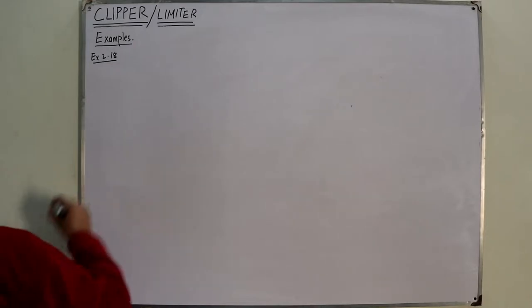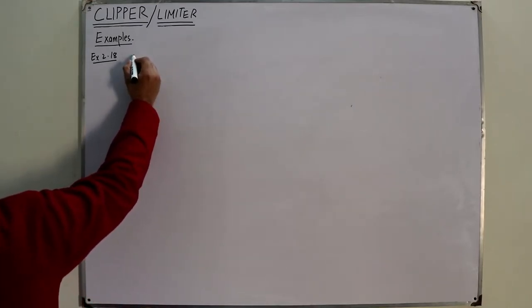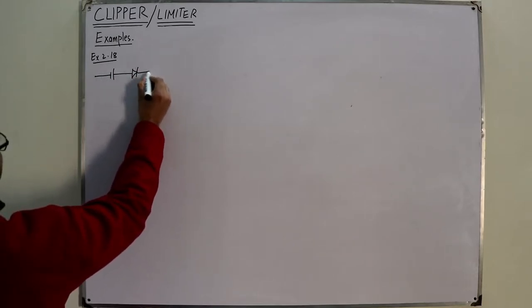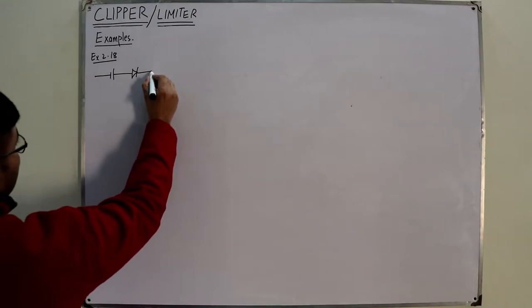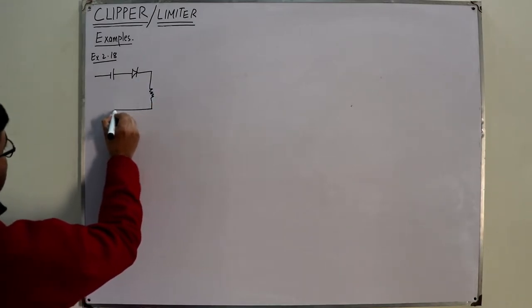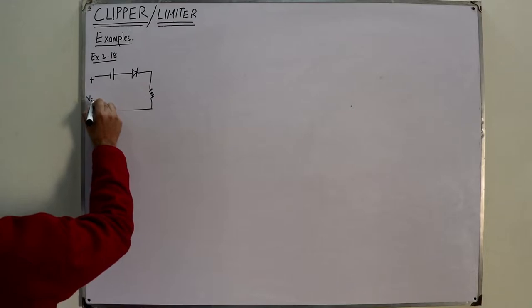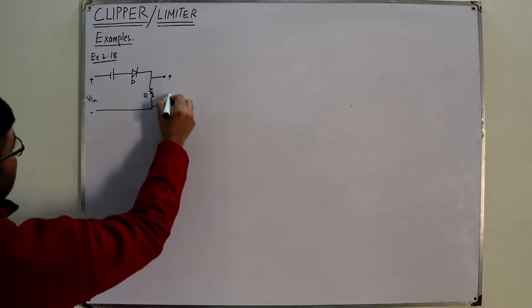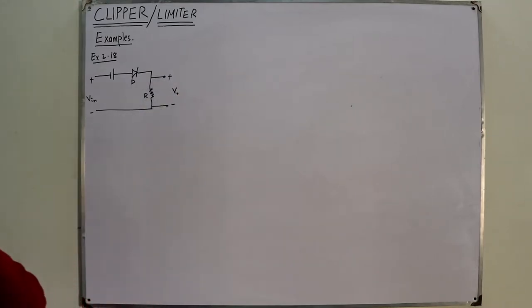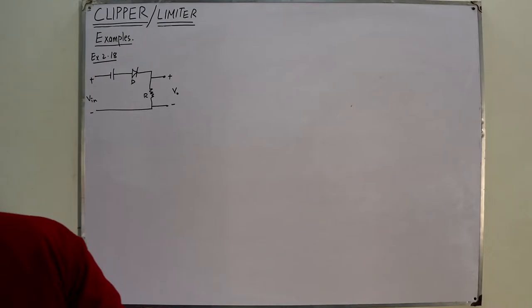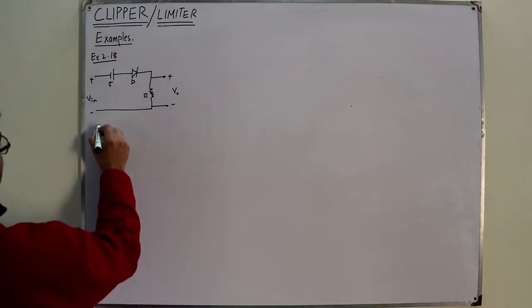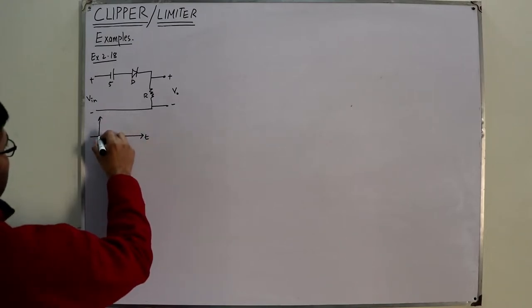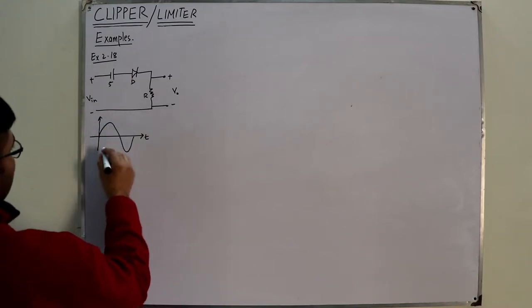The circuit is given: you have a source first — this is a negative to positive source — then you have a diode, and then you have a resistor across which the output is taken. This is the plus-minus input voltage. This is an ideal diode, resistor, and plus-minus output voltage. The source has a value of 5 volts.